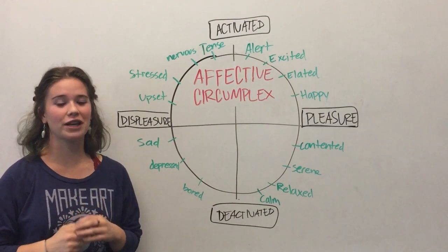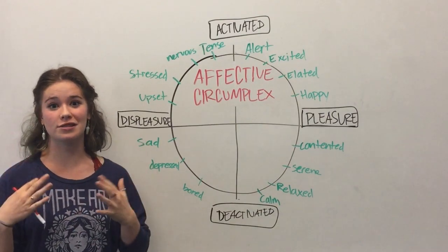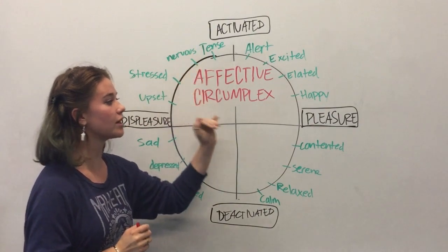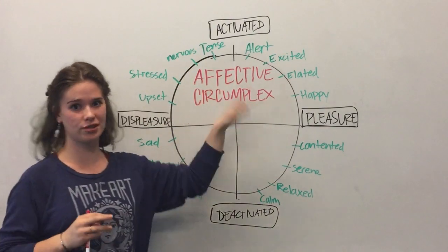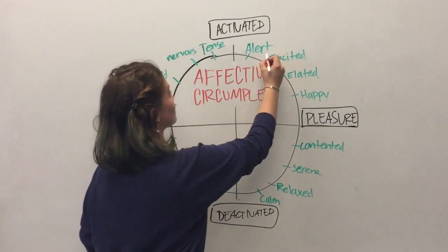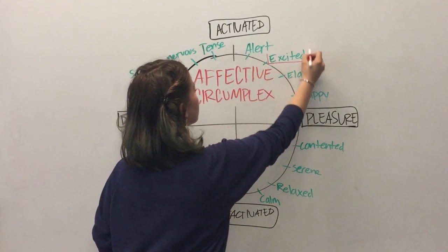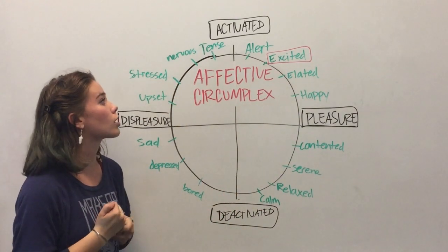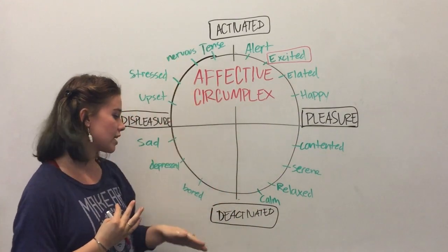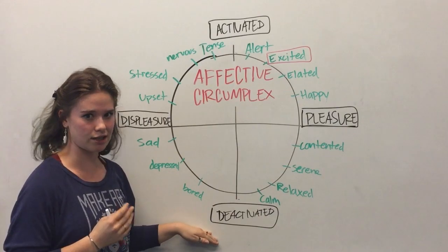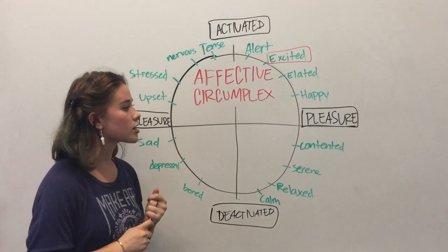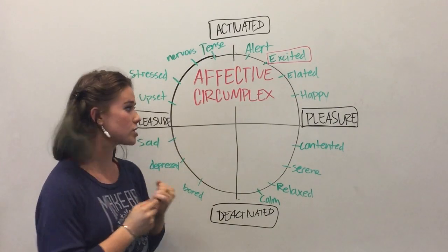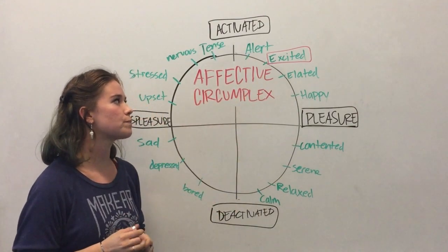Let's say, for example, that you were given a puppy as a surprise. Now, this is going to fall somewhere on the activated yet pleasurable side of the spectrum, probably under excited. Now, because in this situation you were surprised, you're going to be more activated instead of deactivated. And because it was pleasurable — it was a gift instead of a threat — it's going to be on the pleasure side of the spectrum.